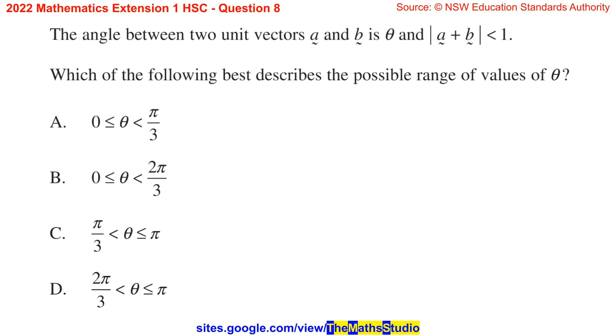Question 8. The angle between two unit vectors A and B is theta, and the length of vector A plus vector B is less than 1. Which of the following best describes the possible range of values of theta?